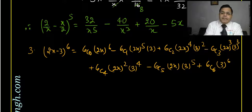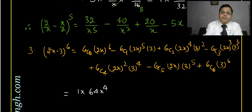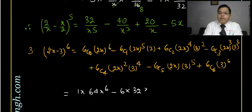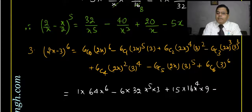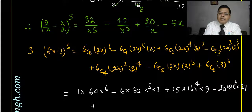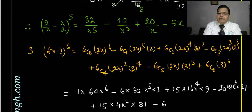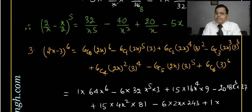Now computing: 2 to the power 6 is 64, so first term is 64x to the power 6. Then 6 times 32 times 3 gives the second term's coefficient. 6C2 is 15, times 16x to the power 4 times 9. 6C3 is 20, times 8x cubed times 27. 6C4 is 15, times 4x squared times 81. 6C5 is 6, times 2x times 243. And 3 to the power 6 is 729.